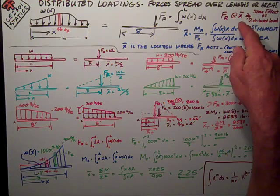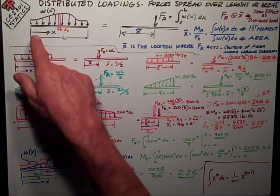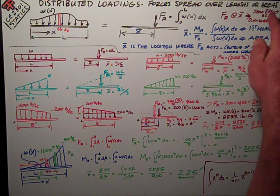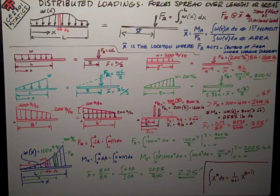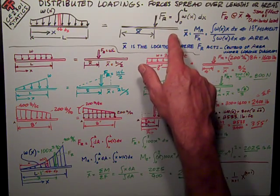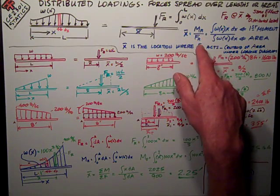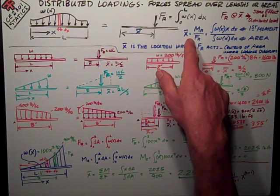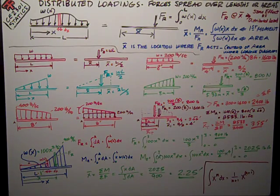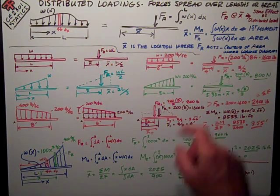And that resultant force acting at a point, which we're going to call x bar from some point of reference, has the same effect as the distributed load, both the force and the moment that it creates. So we're going to calculate that x bar distance as the moment resultant divided by the force resultant, which is like that d distance we've been talking about with couples and other moments, the shortest perpendicular distance.